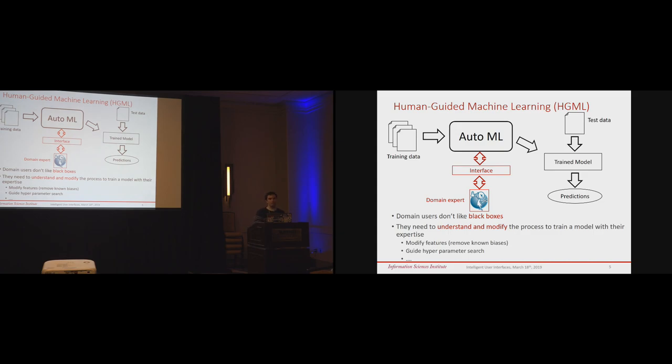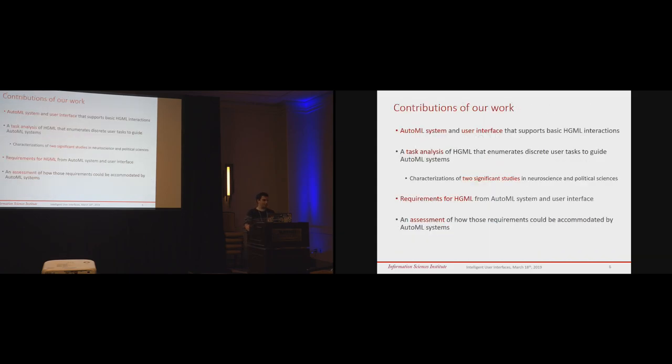So, in our work, what we are aiming for is to understand this process better. And what we have done is that we have a previous existing AutoML system, and we have been collaborating with people, researchers that have been creating user interfaces. And what we did was first to create a first interaction between our AutoML system and the UI to support what we call basic human-guided machine learning interactions, which is having a human in the loop and interacting with the AutoML system.